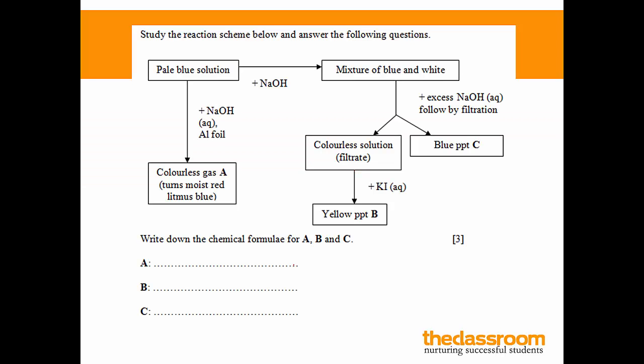Here you see a flowchart with three unknown substances A, B and C. Now we start with a pale blue solution. And usually if a solution is blue in color, it will contain copper ions. Now we're going to go right, arrow on the right here. And notice how we add sodium hydroxide. Now when we add sodium hydroxide, what you're doing is you're testing for cations.